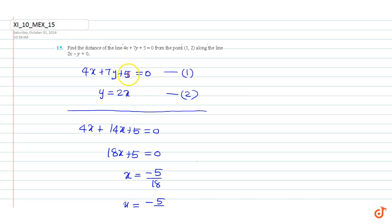First, we will find the point of intersection of the lines 4x plus 7y plus 5 equals 0 and y equals 2x. First, we will eliminate y from the two equations.